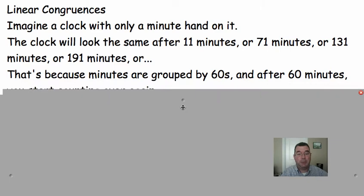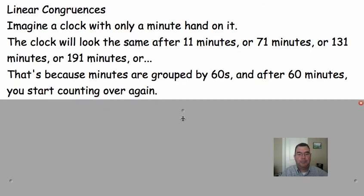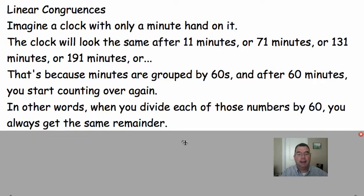And the reason for that is because, as you and I both know, minutes are grouped by 60, so every time 60 minutes passes, then the minute hand is in the same place that it was before. We even start counting minutes over again after something 59. We start off at something o'clock.